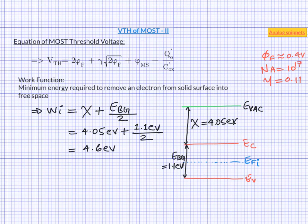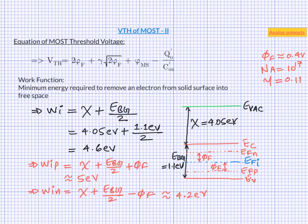Work function of pure or intrinsic silicon is around 4.6 electron volt. Since Fermi level of doped silicon either moves up or down depending on the type of doping, the work function also moves. For our chosen value of phi f, for p-type silicon, it would be around 5 electron volt and for n-type silicon, it would be around 4.2 electron volt.